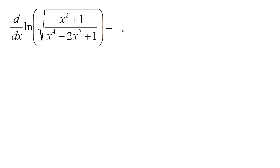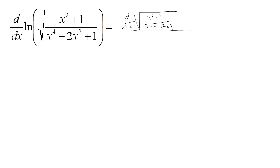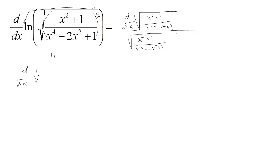Here's another example where applying properties of logs would make life easier. Convince yourself that you would really rather not do this without simplifying first, because taking the derivative of the natural log of this function requires taking the derivative of the inside over the inside, which is messy since you've got a power of 1 half — that's what the square root is — so you bring the power down, take this to 1 power less, then take the derivative of the inside using the quotient rule. Instead, applying the power rule for logs, the 1 half can come down in front: we have 1 half times the natural log of x squared plus 1 over x to the 4th minus 2x squared plus 1.